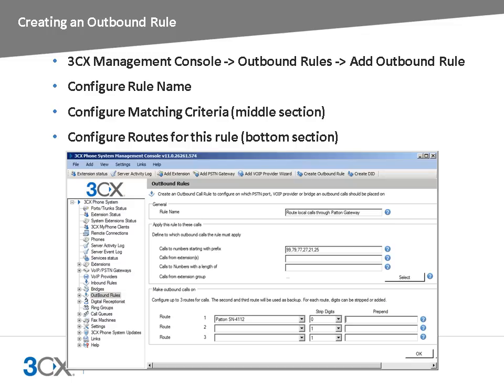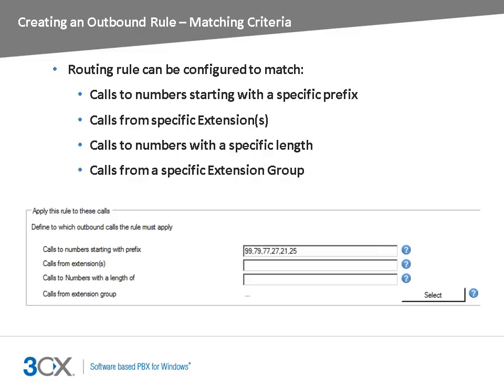In the middle section, you can configure the matching criteria, and you can configure the routes to be taken when the matching criteria is matched from the bottom section. From the matching criteria section, you configure the rules which need to be matched for this rule to be triggered.